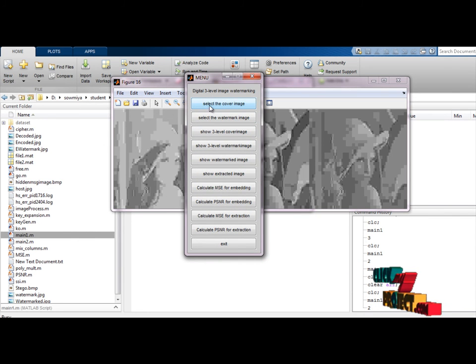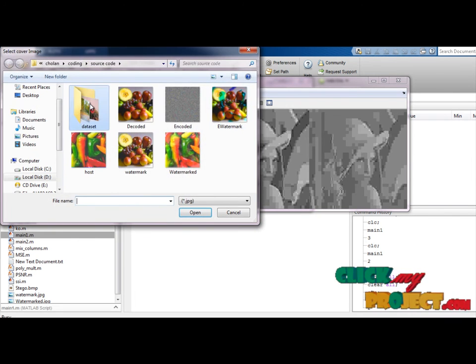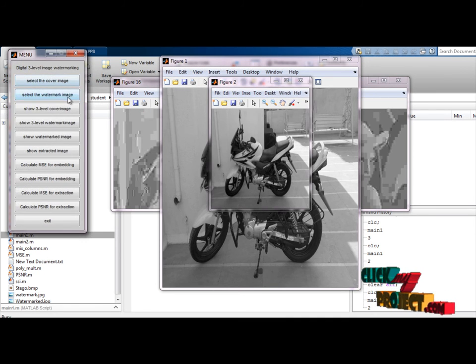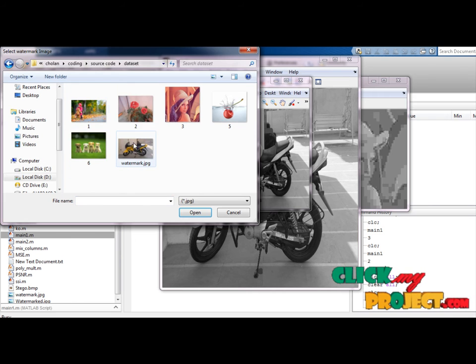After, the menu bar will appear for watermarking. Select a cover image. For example, I will select this one. And after that, the watermarking image. I will find this one.